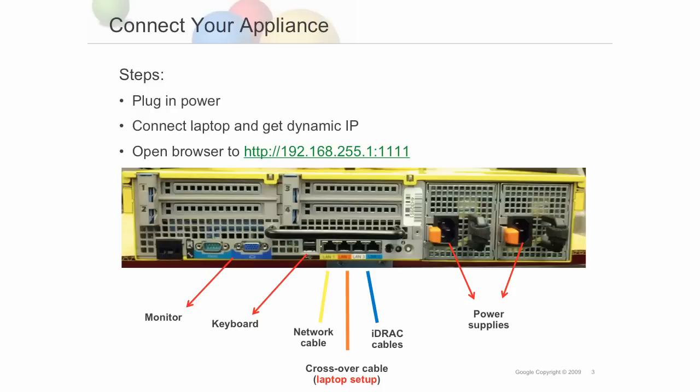To configure the box for your network: first, you assign a host name and fixed IP address on a DNS server. Second, you connect a monitor and keyboard to the appliance to view boot messages. Third, you plug in the power. Fourth, you wait for the system to boot.